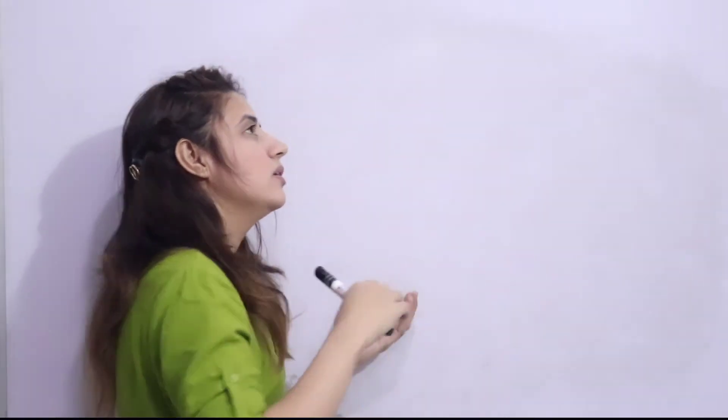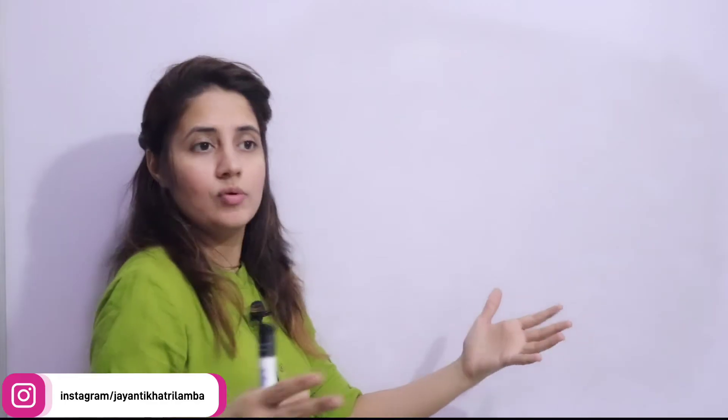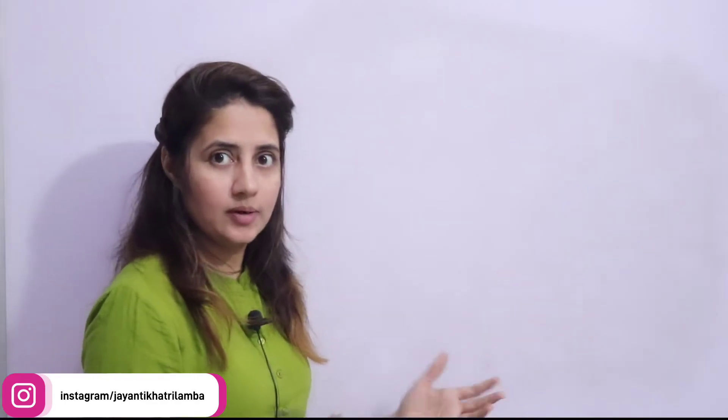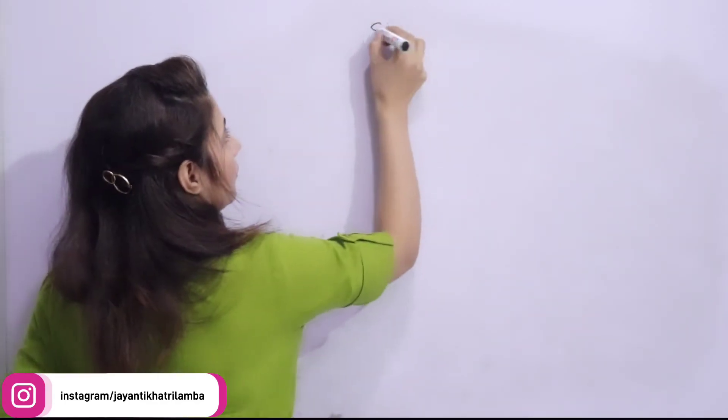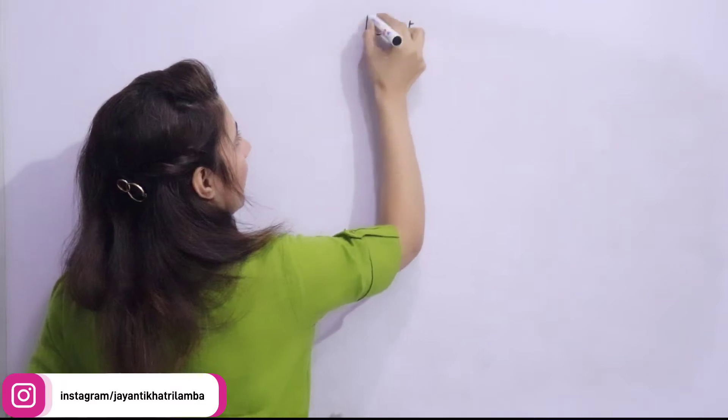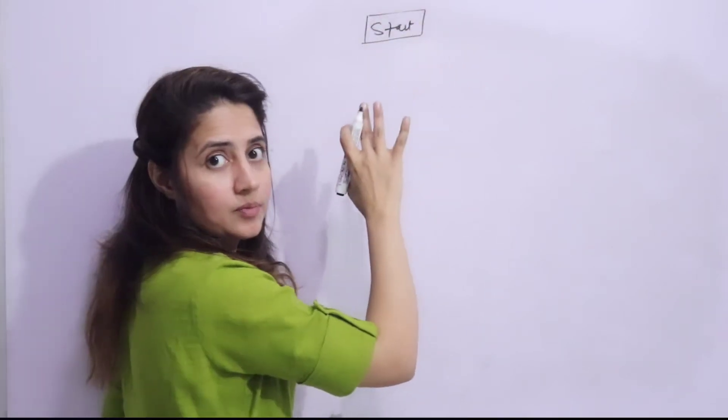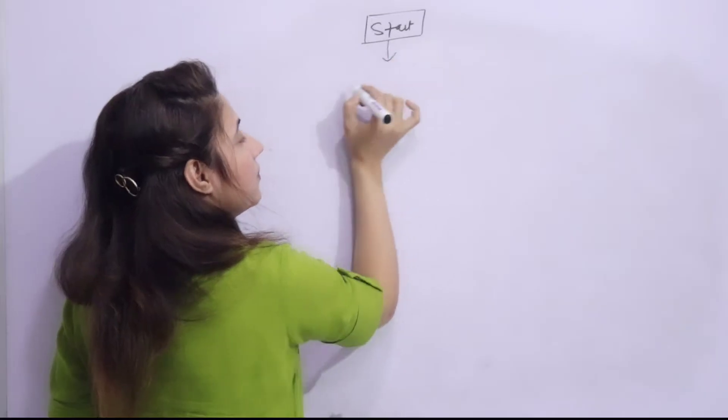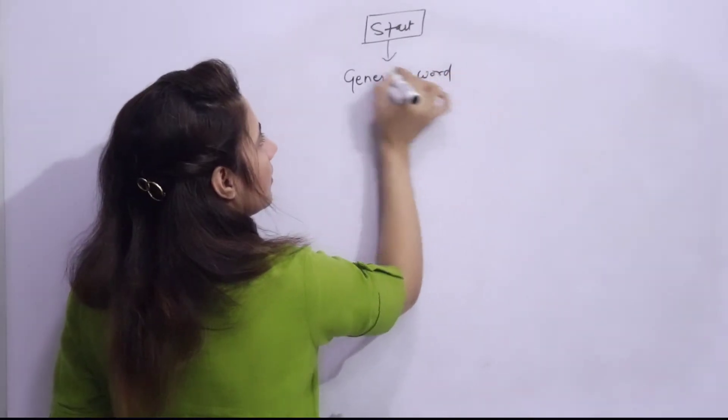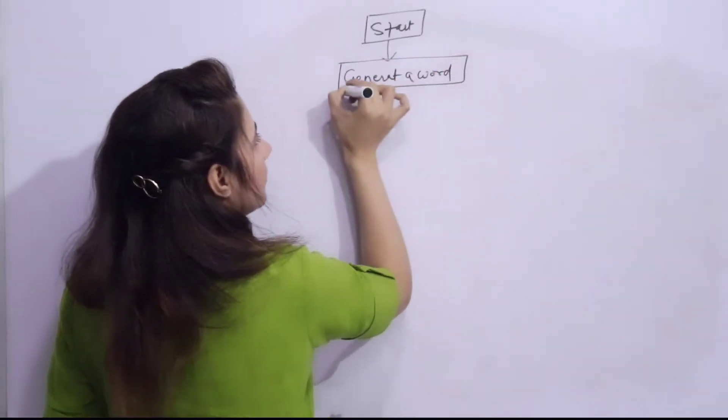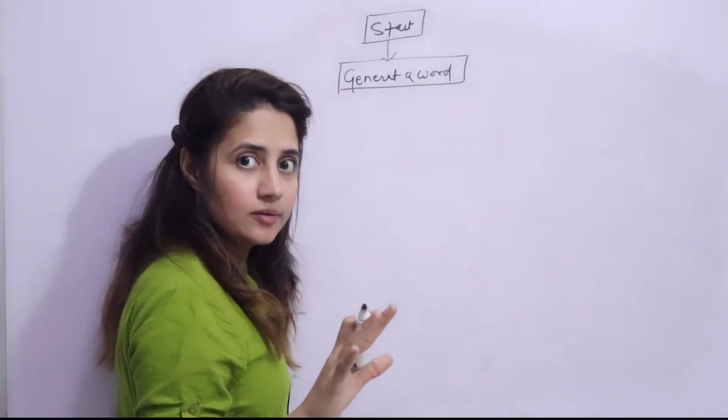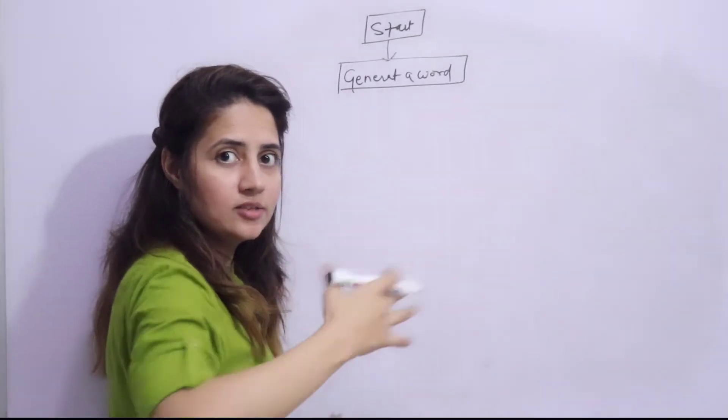So how to draw a flowchart step by step? First thing is one player will guess a word. We'll generate a word. First is start the flowchart, first step is we're going to start, then generate a word, random word. You will be having a word list and generate a random word from that list.